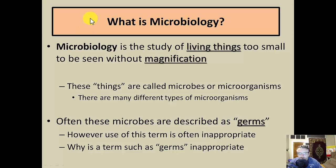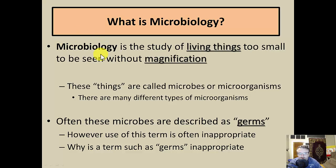There are always different definitions for the same word, but our textbook defines microbiology as the study of living things too small to be seen without magnification. Biology is the study of life, so microbiology — micro means small — is really just looking at small life. The truth is we get into things going on inside of these living organisms, such as their cells and cell structure, so we're not just looking at the organisms but also how they work.